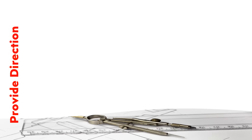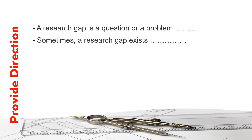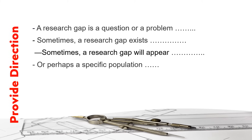A research gap is a question or a problem that has not been answered by any of the existing studies or research within your field. Sometimes a research gap exists when there is a concept or new idea that has not been studied at all. Sometimes you will find a research gap if the existing research is outdated and needs new updated research studies — for example, studies on internet use in year 2001.